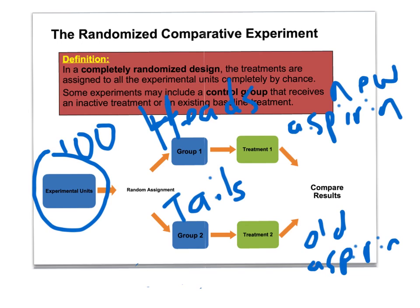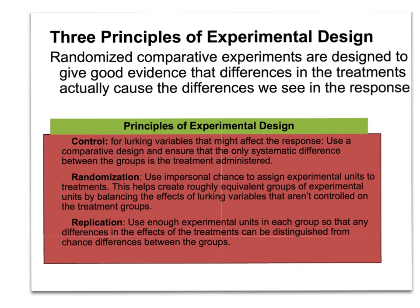Then we can look at our results and make comparisons and be confident in our answers. So, three principles of experimental design: the biggest one is randomization — it balances out confounding variables between the two groups. We also want to control for lurking variables using some sort of comparative design, whether we give one group the new aspirin and another group the old aspirin, or one group the new aspirin and another group a placebo — like a sugar pill where they think they're taking aspirin but it really isn't. We control how we apply the treatment.